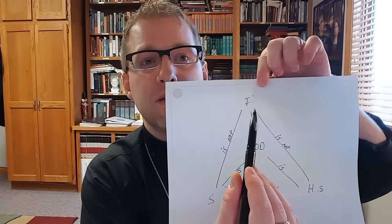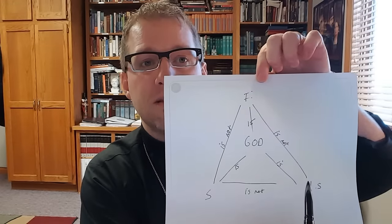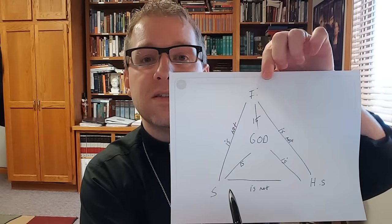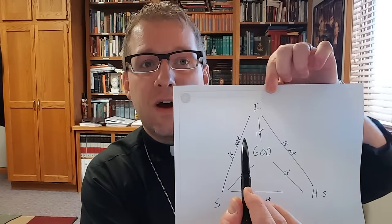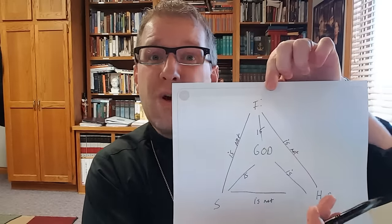We also want to distinguish between the persons. The Father is not the Son, the Son is not the Holy Spirit, and the Holy Spirit is not the Father. So along the outer edges of the triangle you write 'is not' to show these distinctions.